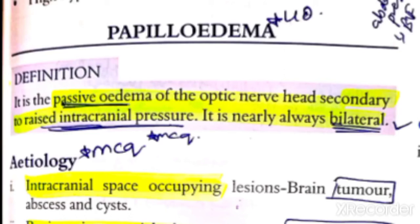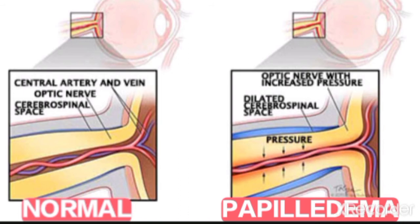In the last section we discussed about the structure of the optic nerve and the optic disc edema. Now we're going to discuss about papilledema. Papilledema means edema of the papilla, which is our optic nerve. The definition is: it is a passive edema of the optic nerve head. The optic nerve head is the region where it starts from the intraocular part. Passive edema means there is no inflammation involved.